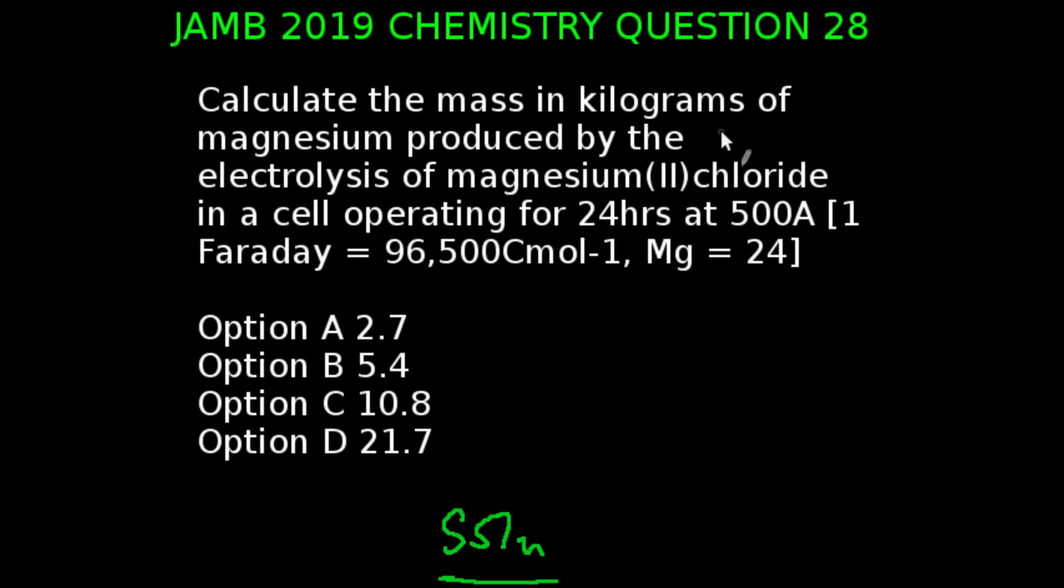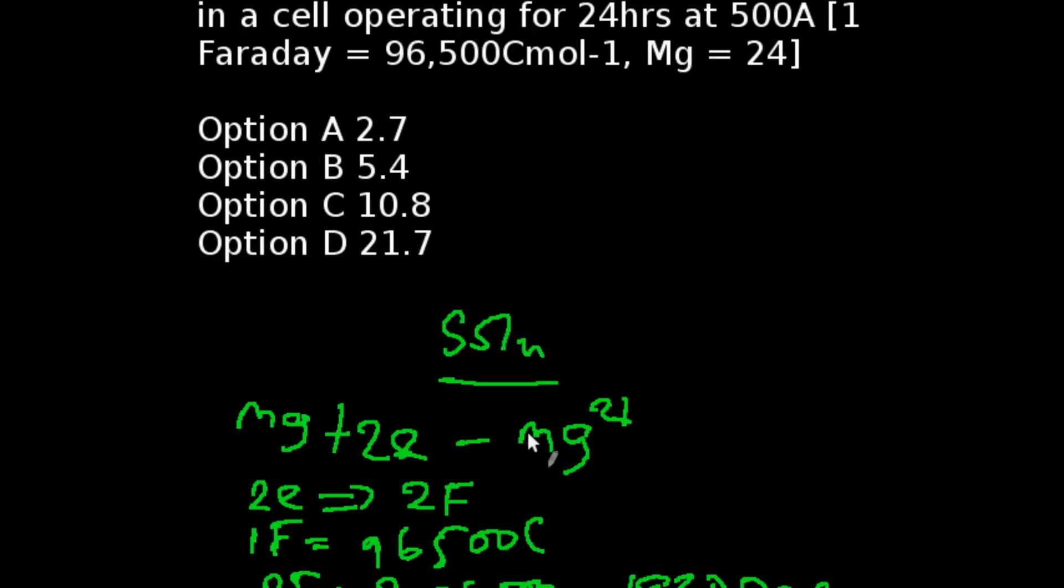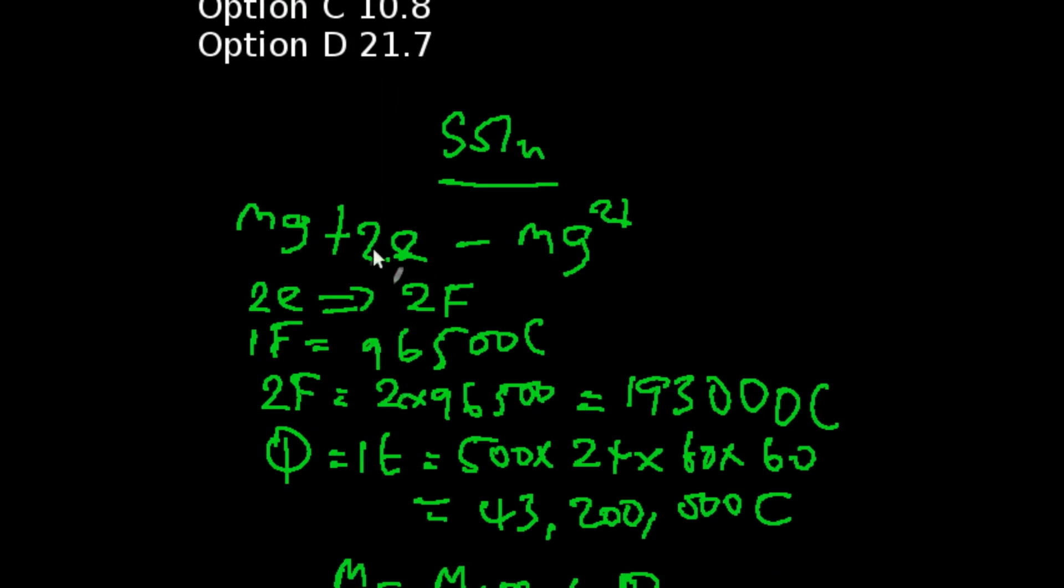Question 28 of JAMB 2019 Chemistry Examination. Calculate the mass in kilograms of magnesium produced by the electrolysis of magnesium-2-chloride in a cell operating for 24 hours at 500 amperes. One faraday is equivalent to 96500 coulombs per mole, and the molar mass of magnesium is 24. For us to solve this problem, we're going to be writing a very small equation here. In the process, magnesium loses two electrons.